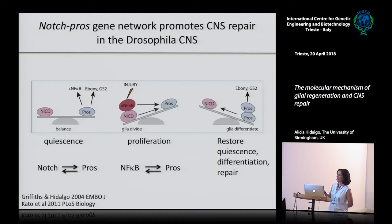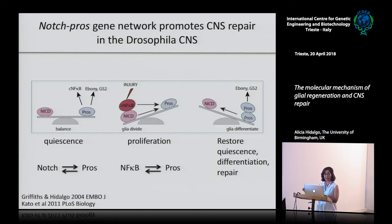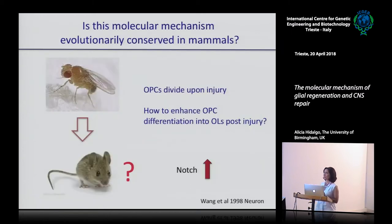This is the summary: Notch and Prospero maintain each other and maintain the glia in G1. Normally they don't divide. They divide in injury, triggered by NF-kB and the TNF receptor. Prospero goes up and stops cell division so it doesn't become a tumor, restores quiescence, restores the levels of Notch going back to G1, and restores the levels of NF-kB enabling further responses.